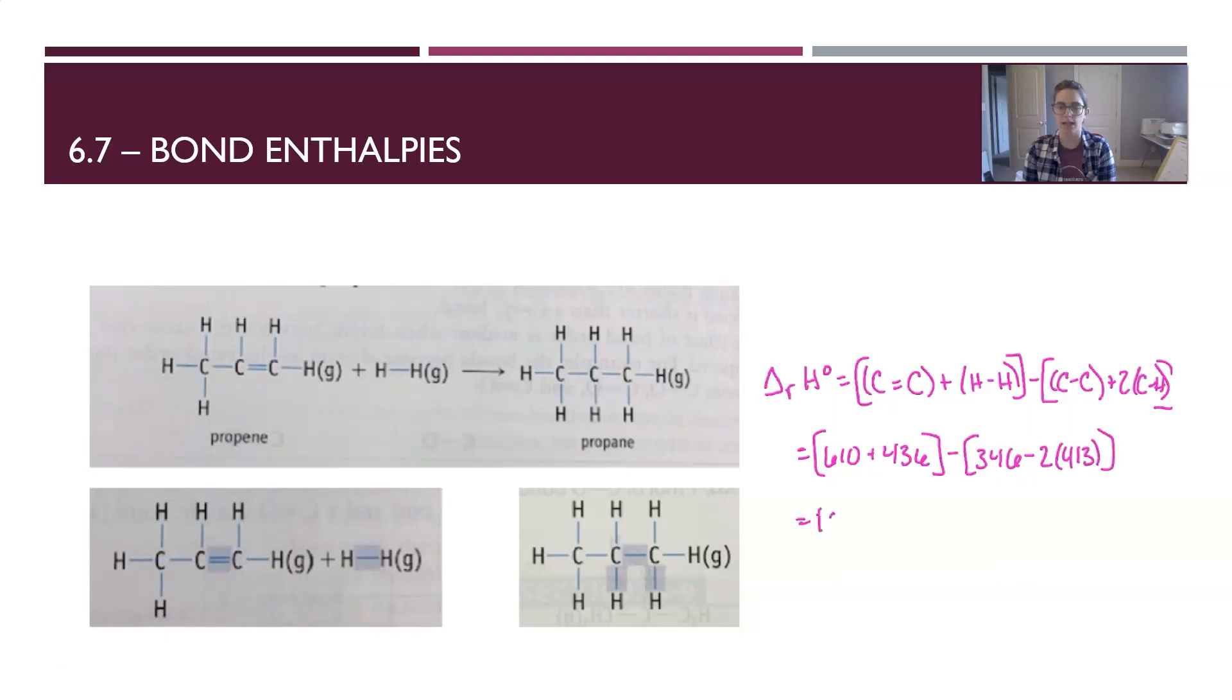The energy of a carbon-carbon double bond is 610. A hydrogen-hydrogen single bond is 436. Carbon-carbon single is 346. And a carbon-hydrogen single bond is 413. So when you plug those in and find the difference, you end up with negative 126 kilojoules per mole of reaction, which means that this is an exothermic reaction.